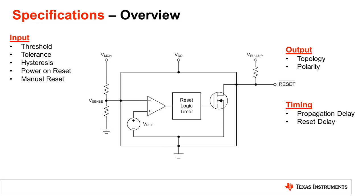Specifications for a voltage supervisor can be divided up into three main categories: input, output, and timing features. For this video, we will go into details on the input which include topics such as input threshold, tolerance hysteresis, power on reset, and manual reset.